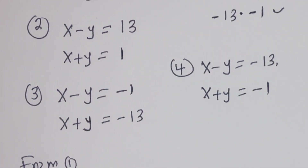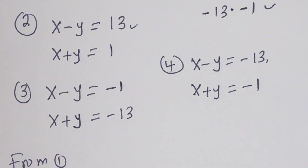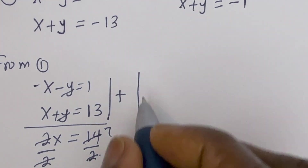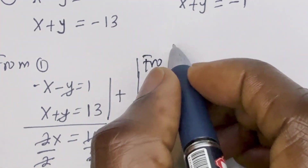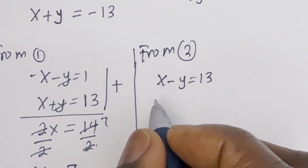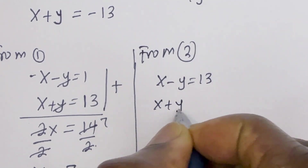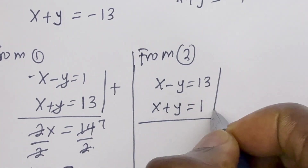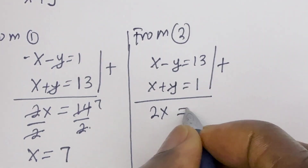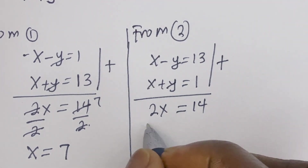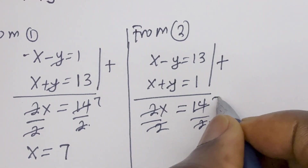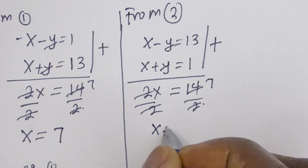Now let's consider the second case: x minus y equals 13, and x plus y equals 1. Let's use the elimination method by adding the two equations together. The y terms cancel. We have 2x equals 13 plus 1, that is 14. Let's divide both sides by 2, giving x equals 7.